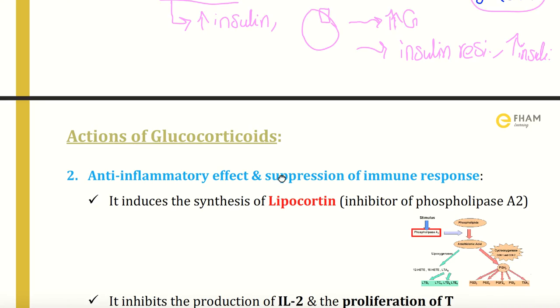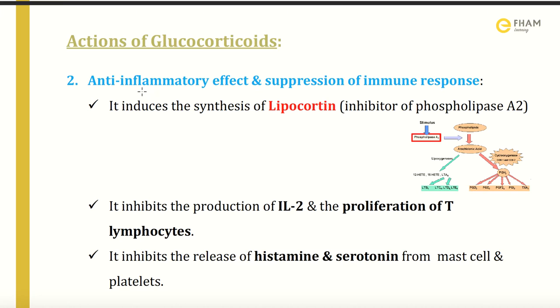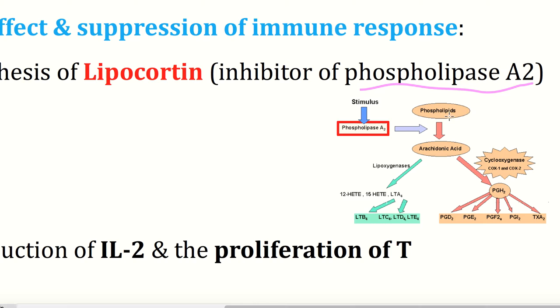The second action is anti-inflammatory effect and suppression of immune response, which is the most common therapeutic use. Cortisol induces the synthesis of lipocortin, which is an inhibitor of phospholipase A2. In inflammation, membrane phospholipids are converted to arachidonic acid by phospholipase A2. Arachidonic acid is then converted by lipoxygenase and cyclooxygenase to inflammatory mediators that recruit cells like macrophages, lymphocytes, and neutrophils. Cortisol inhibits phospholipase A2, so inflammatory mediators are not produced, resulting in immune suppression.